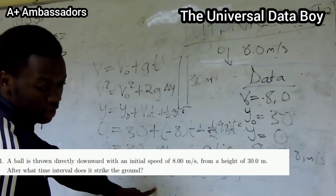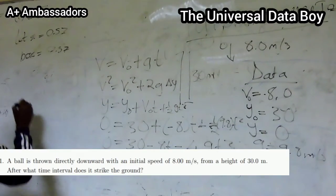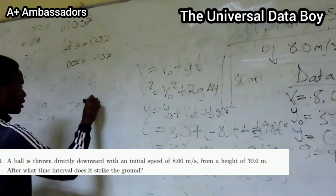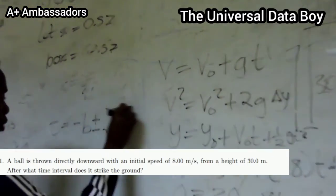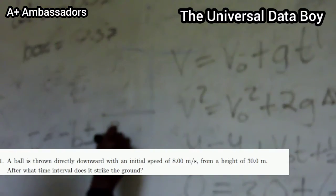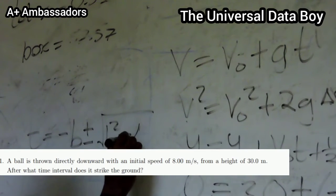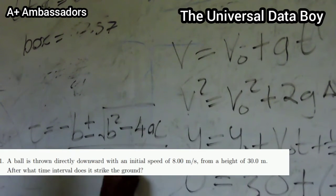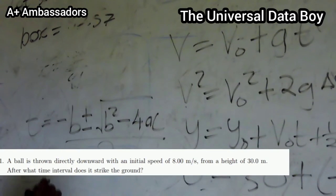We solve this with the quadratic formula. So we have t = (-B ± √(B² - 4AC)) / 2A.